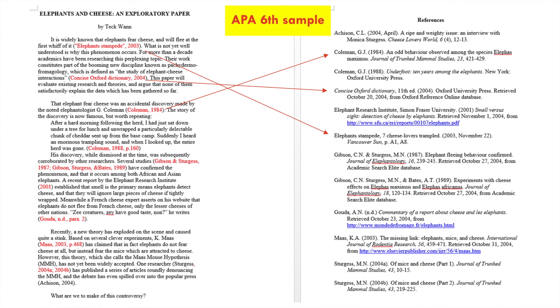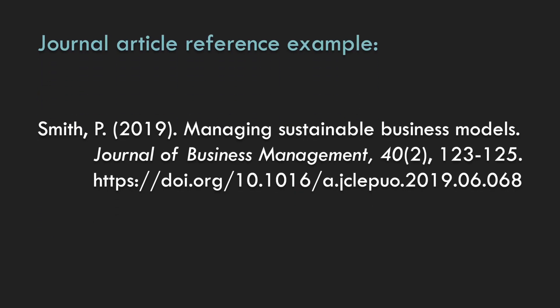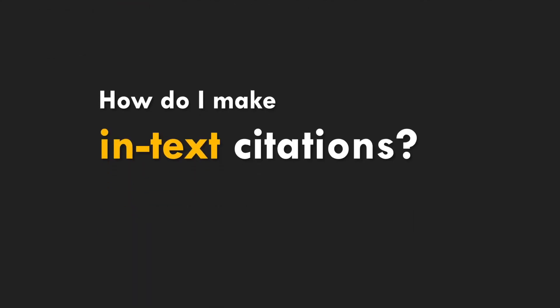Here's an example from an APA article. You can see that in red on the left-hand side of the screen are the in-text references, and on the right is a reference list that appears at the end of your essay. Here's an example of an in-text citation — you can see in yellow where we've cited the author's names and the year they published. And here's an example of a citation in the reference list, which contains a large amount of information to help your reader find that article.